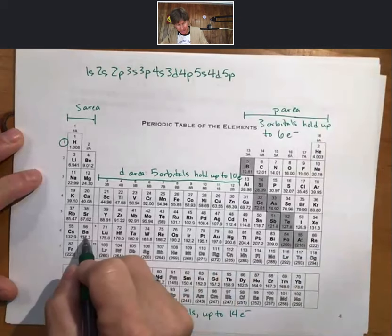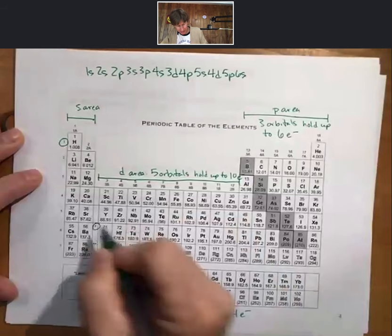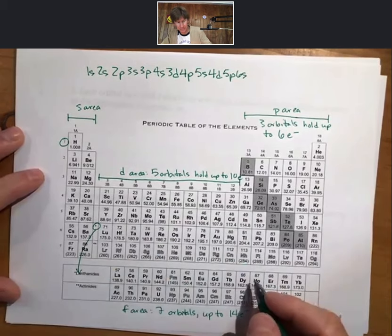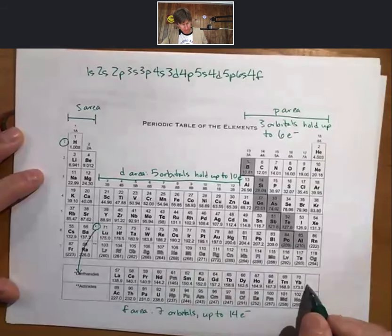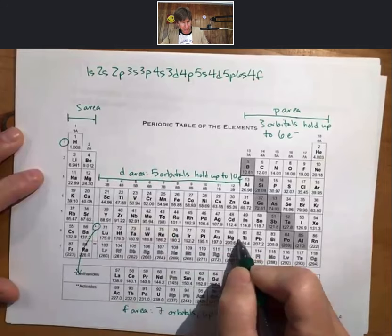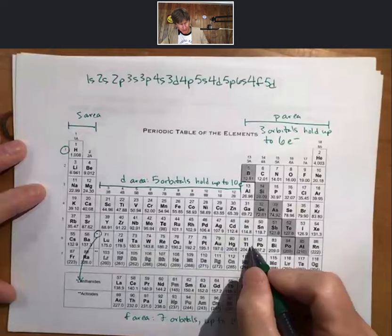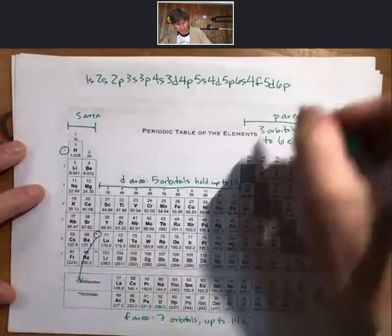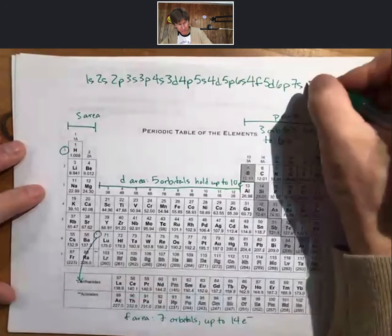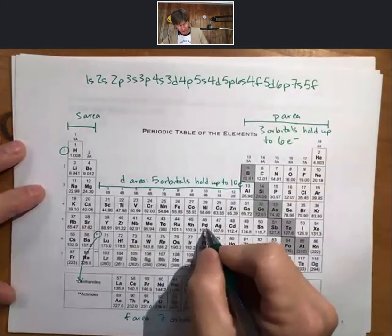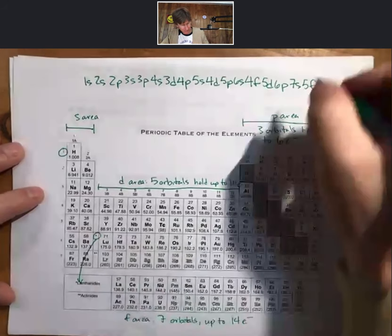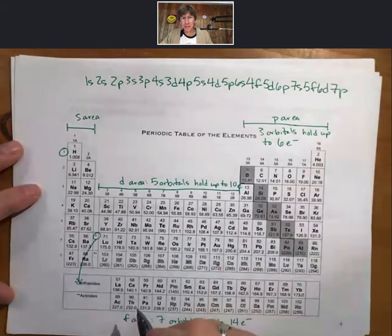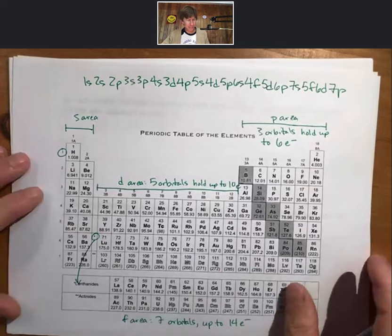Ding, 6s, we hit the asterisk. The asterisk says go down. We find our first f area. Our first f area is 4f, back up to 3, 4, 5d, 6p, ding, 7s, second asterisk, 5f, 3, 4, 5, 6d, and for all of the elements that we know of so far through 118, the last one is 7p, which is a little bit farther than the previous slide went to, but that covers all the elements.